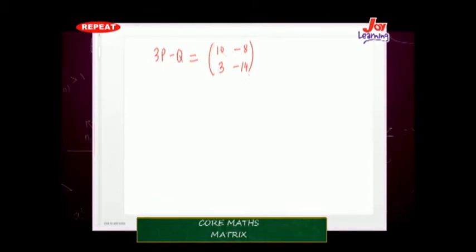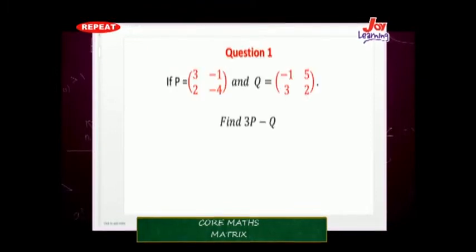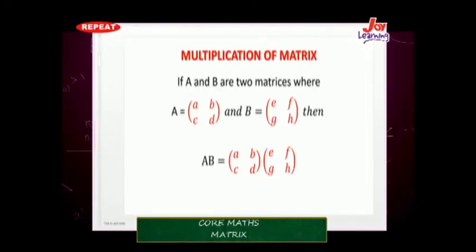Let's look at another example — matrix multiplication. Question number 3: if A and B are two matrices where A has entries A, B, C, D and B has entries E, F, G, H, then the matrix product AB is found using what we call the row by column multiplication. Pay close attention to how the order and pattern work.